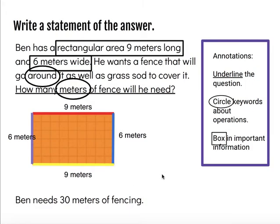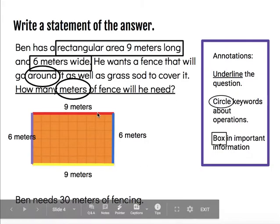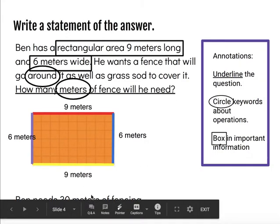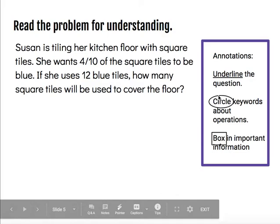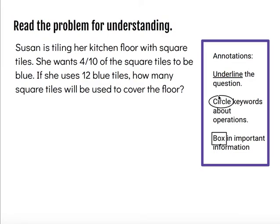Here's another completed problem, again showing all the steps of read, draw, and write. Now let's put that to work. Susan is tiling her kitchen floor with square tiles. She wants four out of ten or four tenths of the square tiles to be blue. If she uses twelve blue tiles, how many square tiles will be used to cover the floor?